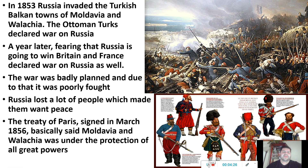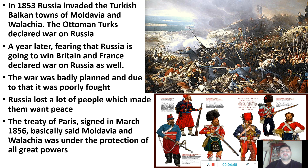In 1853, Russians invaded the Turkish Balkan towns of Moldavia and Wallachia. The Ottoman Turks declared war on Russia. Britain and France didn't jump into the fight right away — they wanted to see how things played out. There were some talks and negotiations, but after about a year, Britain and France decided they had to get in there, because it looked like Russia might actually win.